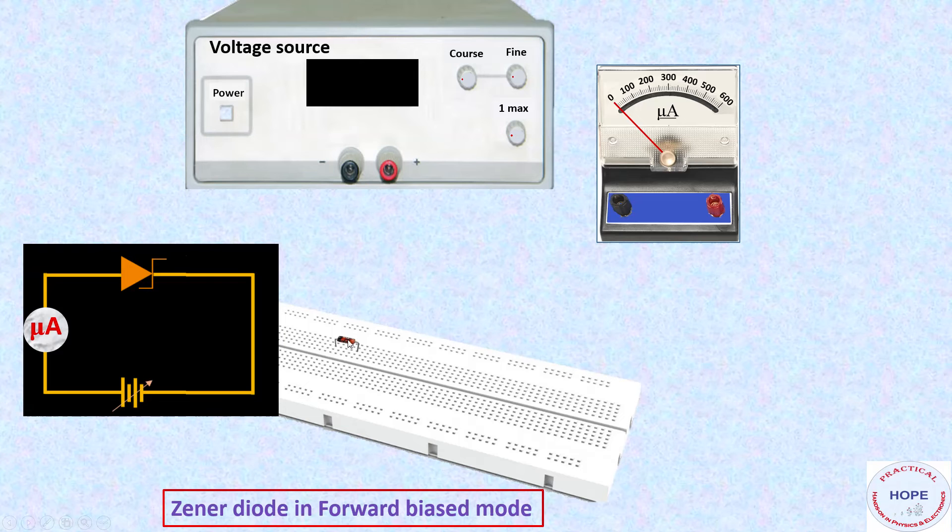So next task is to study Zener diode in forward bias mode. To achieve this we need a power supply, micrometer, breadboard and a Zener diode. Before starting the experiment we have to check whether the Zener diode is working fine or not. This can be done easily using a multimeter. The method of checking a diode using multimeter is already discussed in our earlier video where we determine the Boltzmann constant, so we are not repeating that method here.